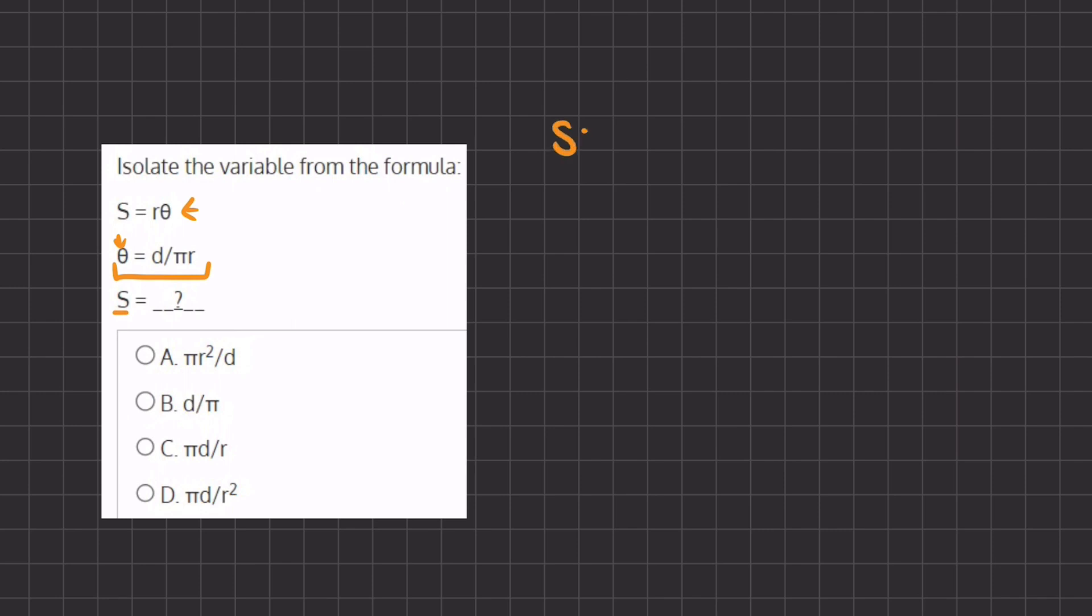Alright, so we are going to take s equals r and instead of theta, we are going to write what was given to us here. So we have d divided by pi times r.